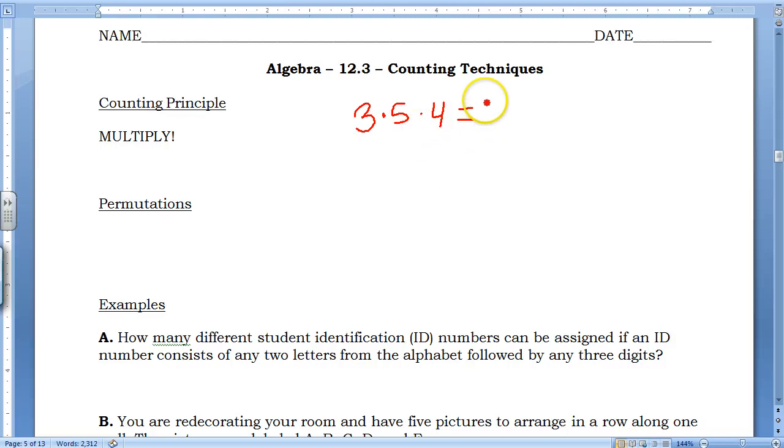And so in that example, there'd be 60 possibilities by multiplying together how many sweaters, how many shirts, and how many pairs of pants.